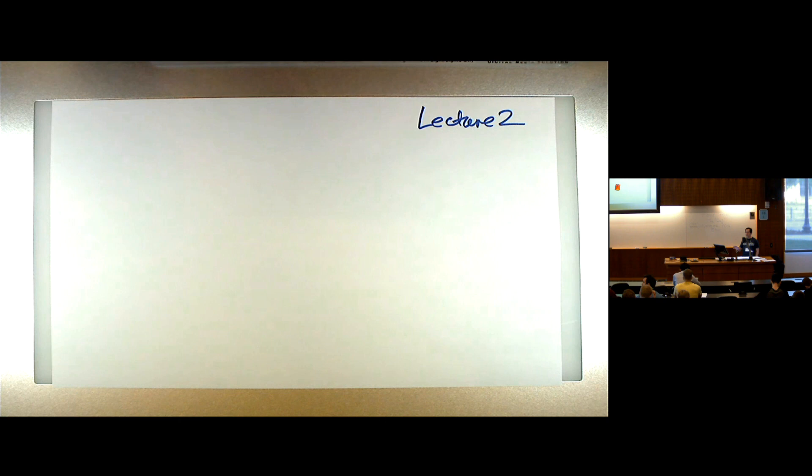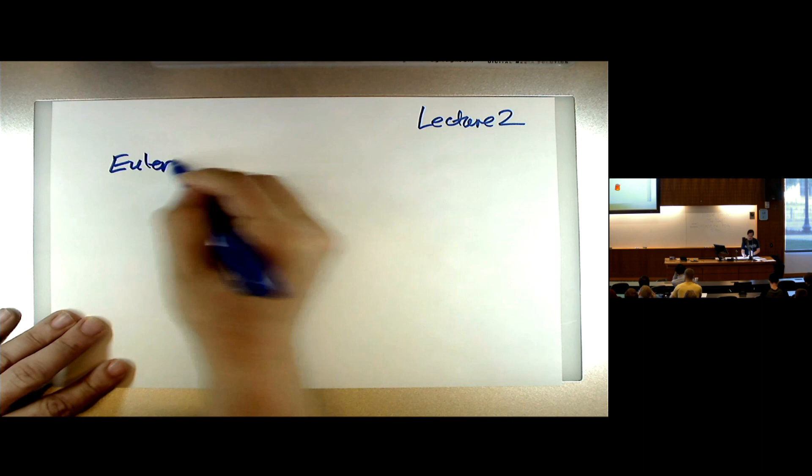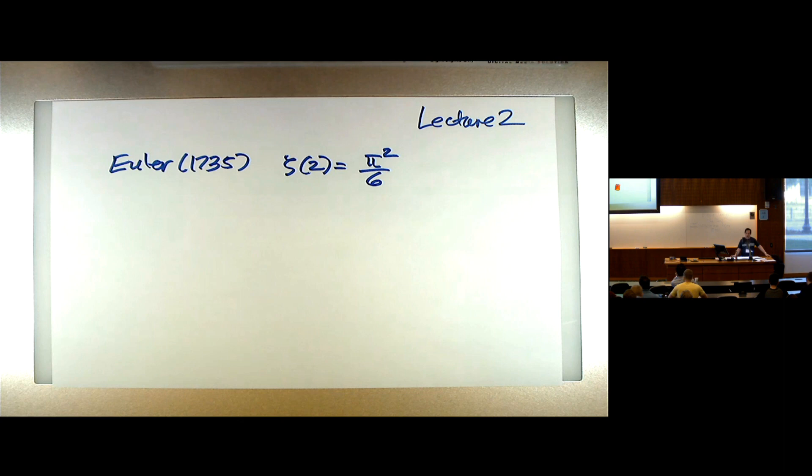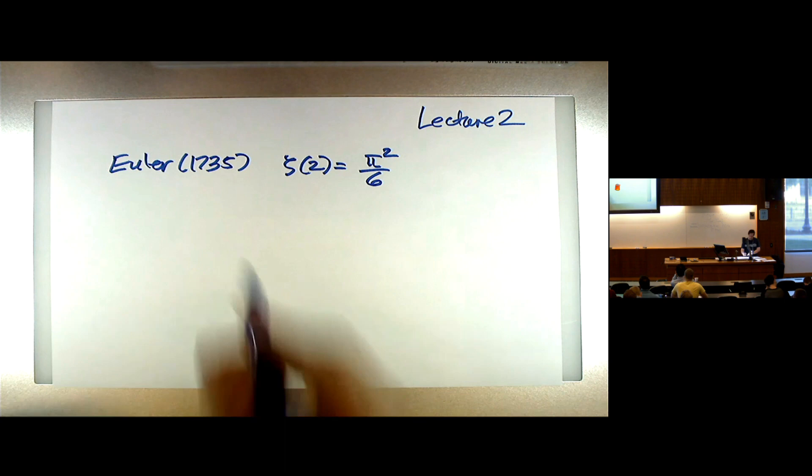What first made Euler famous? He was a young man. He first became famous when he computed zeta of 2. So this was Euler's great discovery, 1734–1735. It was the famous evaluation of the sum of the reciprocal squares as pi squared over 6, which had been almost a 100-year unsolved problem.